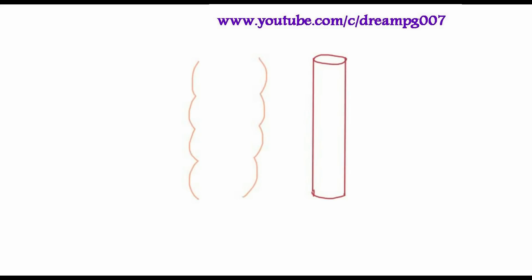In the human body, copper ions are usually seen in the epithelial cells of the intestine. From the intestine, it reaches the blood vessel. Transport of copper from the intestine to blood vessels is with the help of a protein synthesized by the gene MNK.